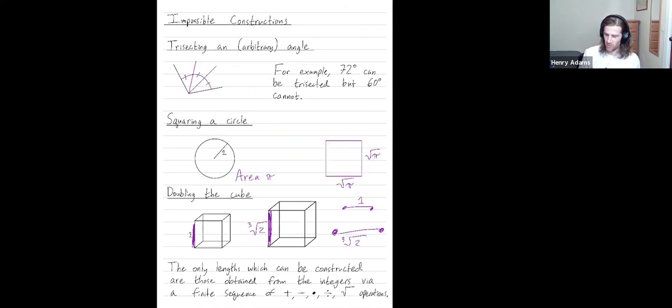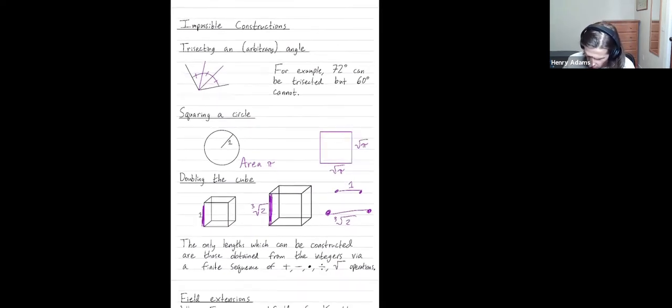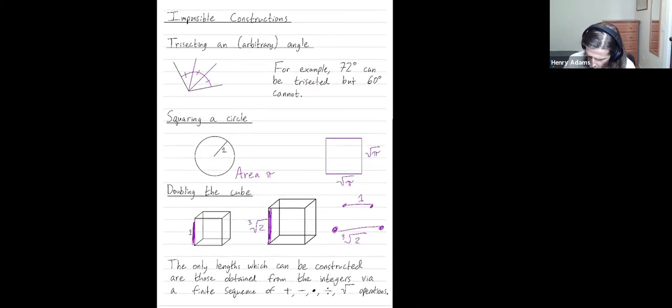So using algebra you can prove that if you start with this edge of length one, the only edge lengths that you can construct are those obtained from the integers via a finite sequence of addition, subtraction, multiplication, division, or square root operations. So you could construct lengths of the form, I don't know, one plus three square root of five, and then once you can construct that you can construct, I don't know, two times the square root of that, and then once you can construct that you can take another square root. But you can construct any rational number. I can replace five here with 17/31sts, right? Because rational numbers can be obtained using multiplication and division from the integers.